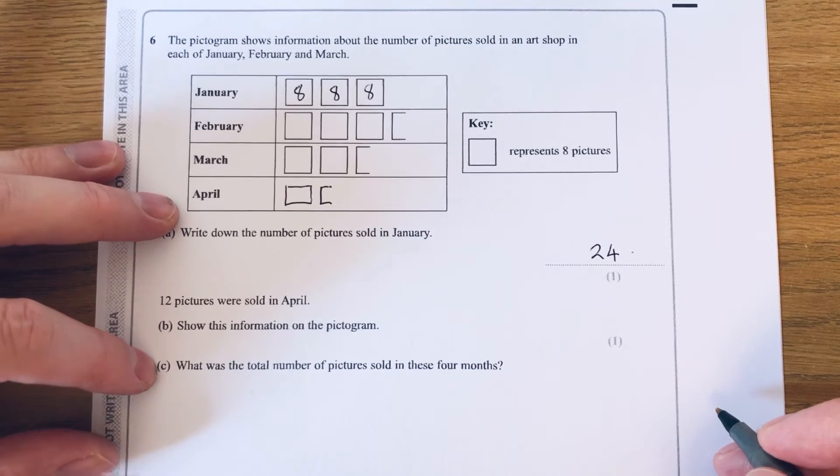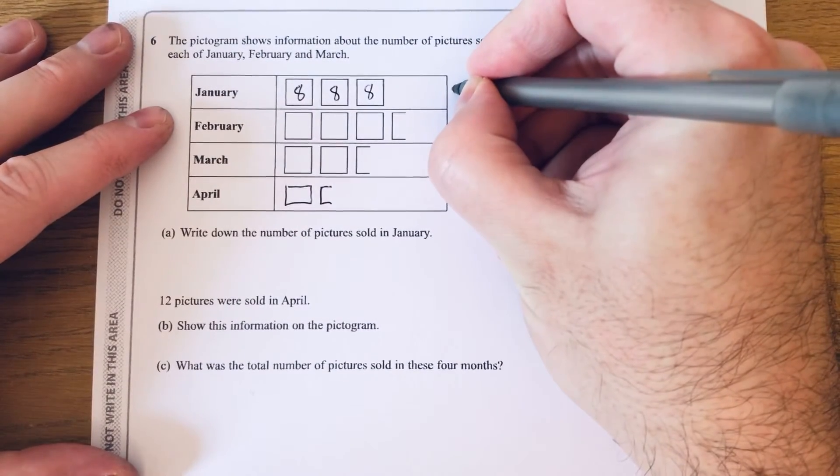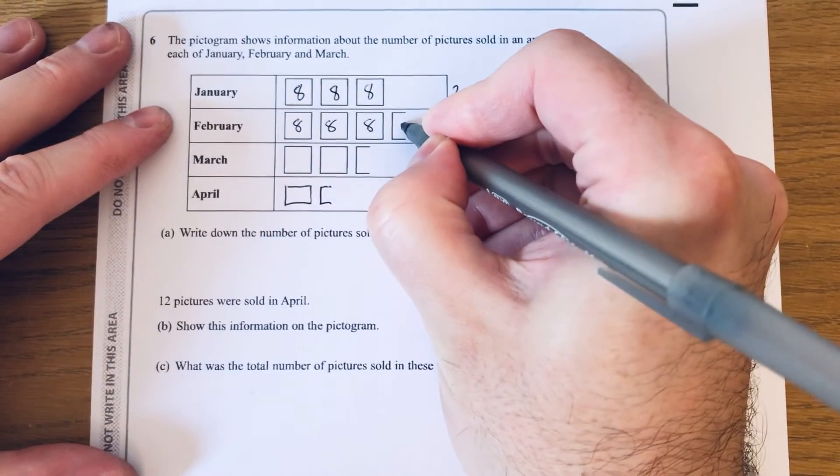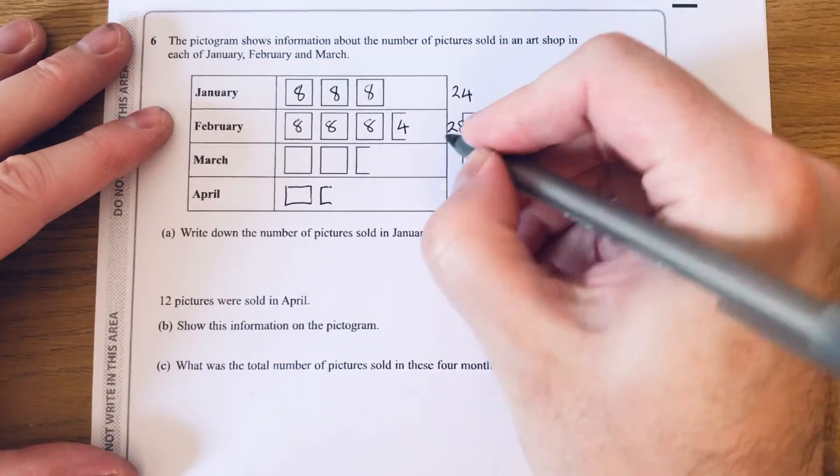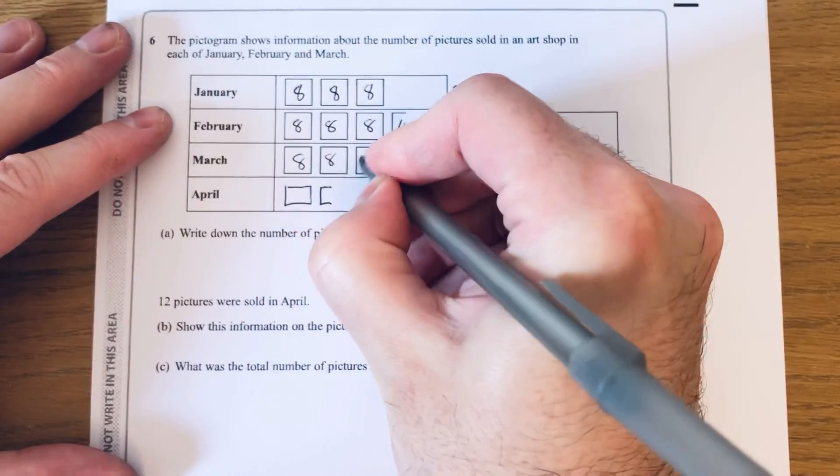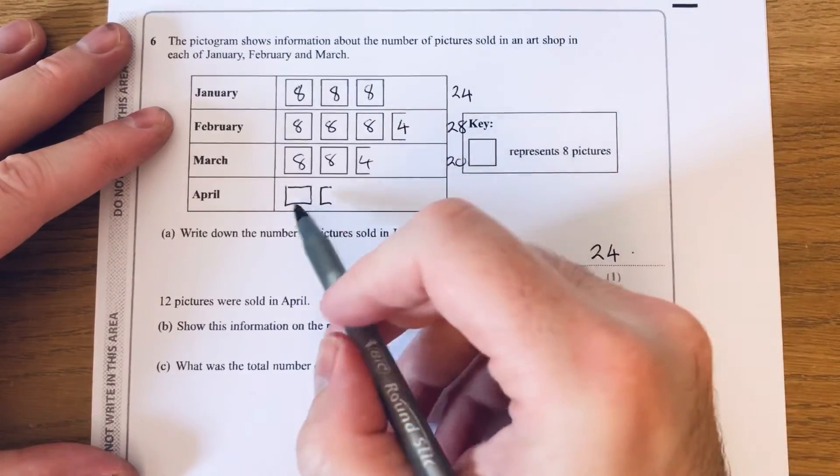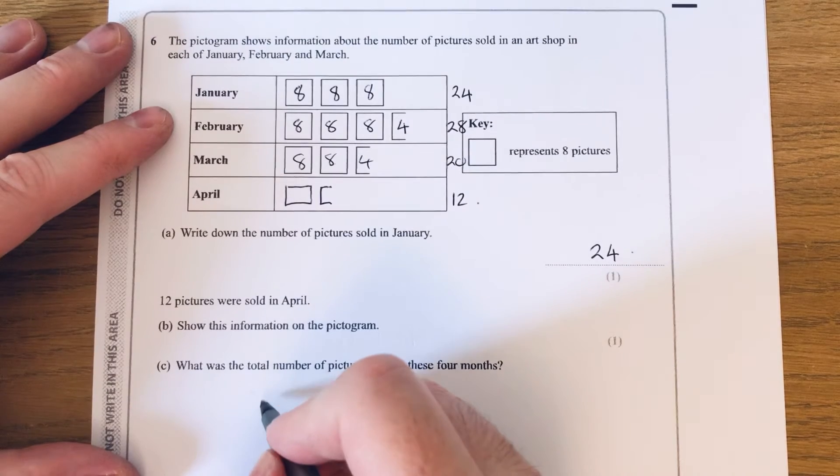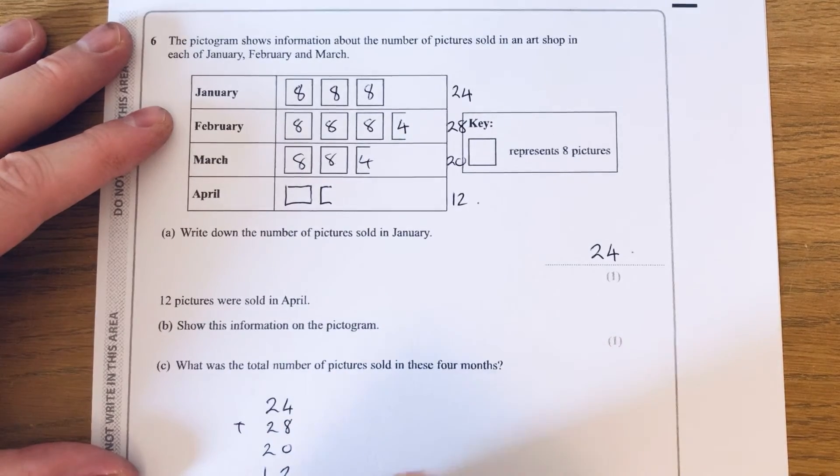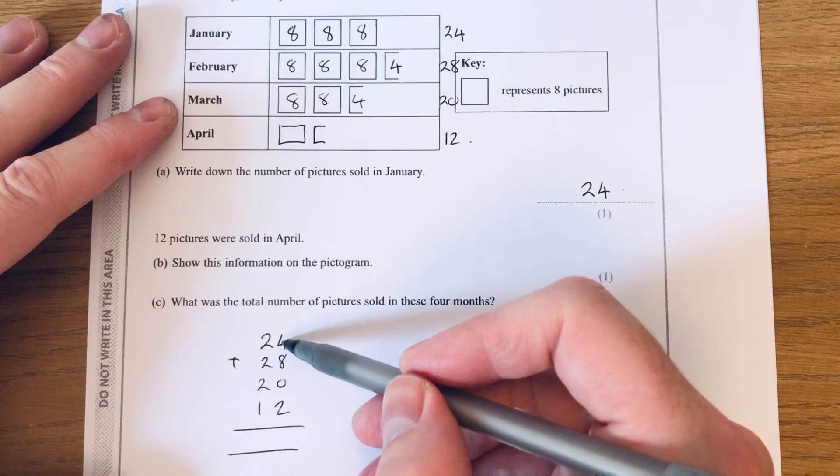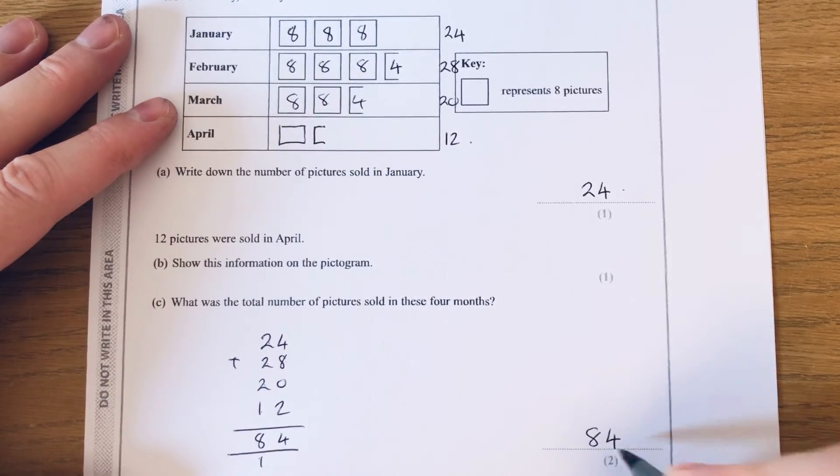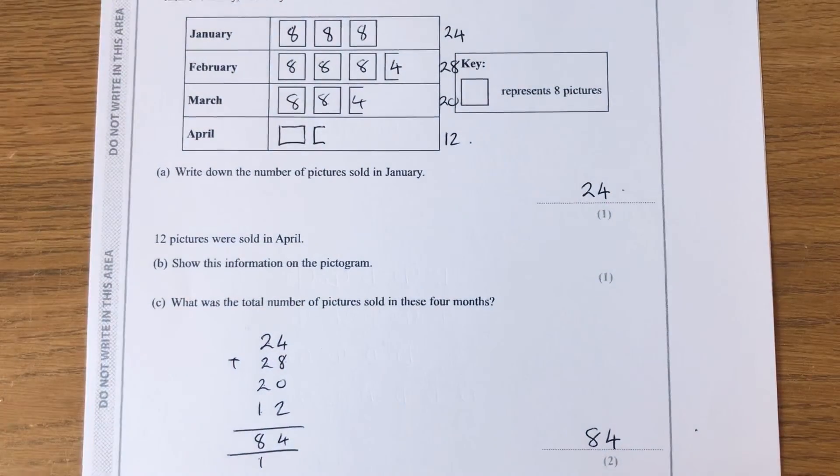Part C says what was the total number of pictures sold in these four months. We've already done January which was 24. February we've got eight, 16, 24, and this one would be four, so that's 28. March we've got eight, 16, and another four, that's 20. And April is 12. So if we add these up: eight, 12, 14... two, four, six, seven, eight. So we've got 84 pictures sold altogether.